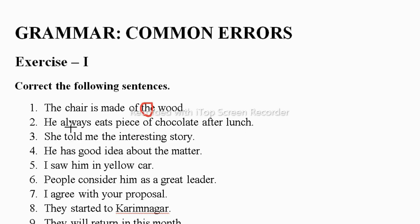Next: 'He always eats piece of chocolate after lunch.' Since 'always' indicates present simple tense, we say 'pieces of chocolate.' Then: 'She told me the interesting story' — here we need the indefinite article, so it becomes 'an interesting story.' And: 'He has good idea about the matter' becomes 'he has a good idea.'